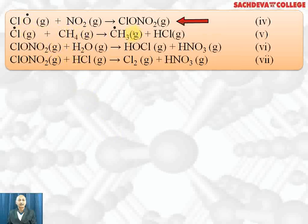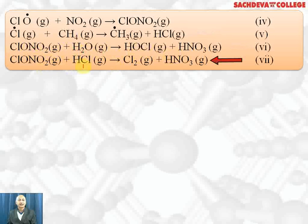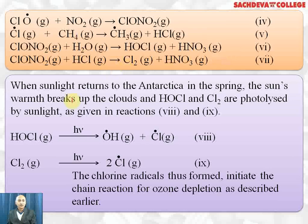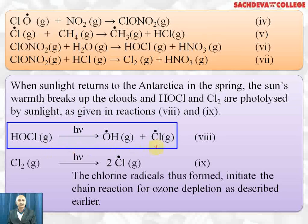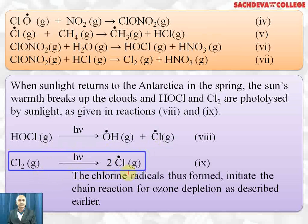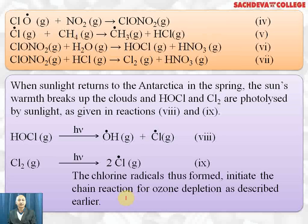The reactions taking place include: chlorine monoxide reacts with nitrogen dioxide to form chlorine nitrate; chlorine free radical reacts with methane to form methyl free radical and HCl; chlorine nitrate gets hydrolyzed by water in polar stratospheric clouds to form HOCl plus nitric acid; and chlorine nitrate also reacts with HCl to form Cl₂ and nitric acid. When sunlight returns to Antarctica in spring, it breaks up the clouds and HCl and Cl₂ are decomposed by sunlight: HCl breaks down into OH and Cl free radicals, and Cl₂ breaks down into chlorine free radicals. These chlorine free radicals initiate the chain reaction for ozone depletion, which starts again in spring over Antarctica.